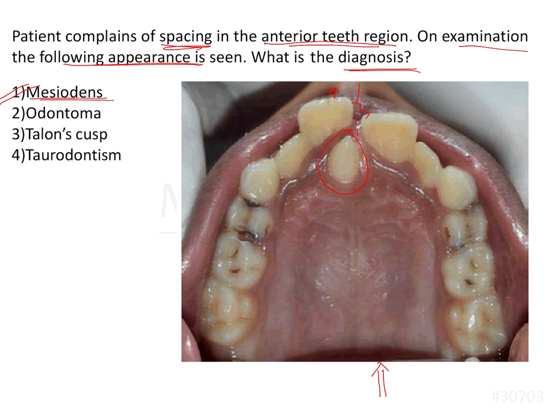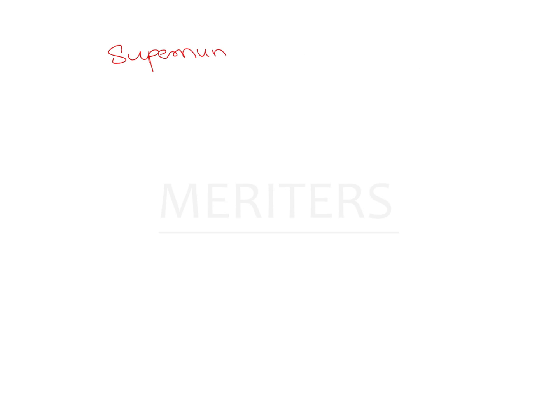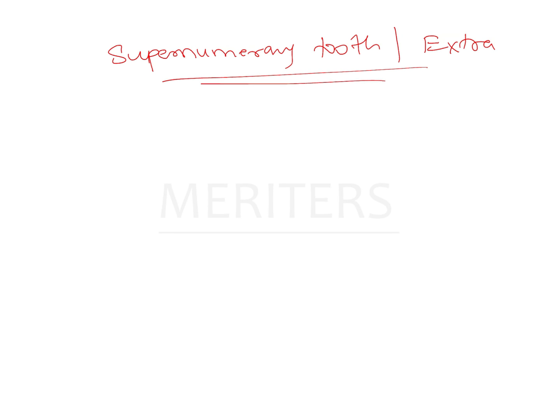A mesiodense is a supernumerary tooth, or an extra tooth. Apart from the set amount of teeth we expect in the dentition, whatever additional teeth are present are known as supernumerary teeth. They usually result from a disturbance during the initiation and proliferation stages of dental development, or they can be related to a larger syndrome or be an idiopathic finding.